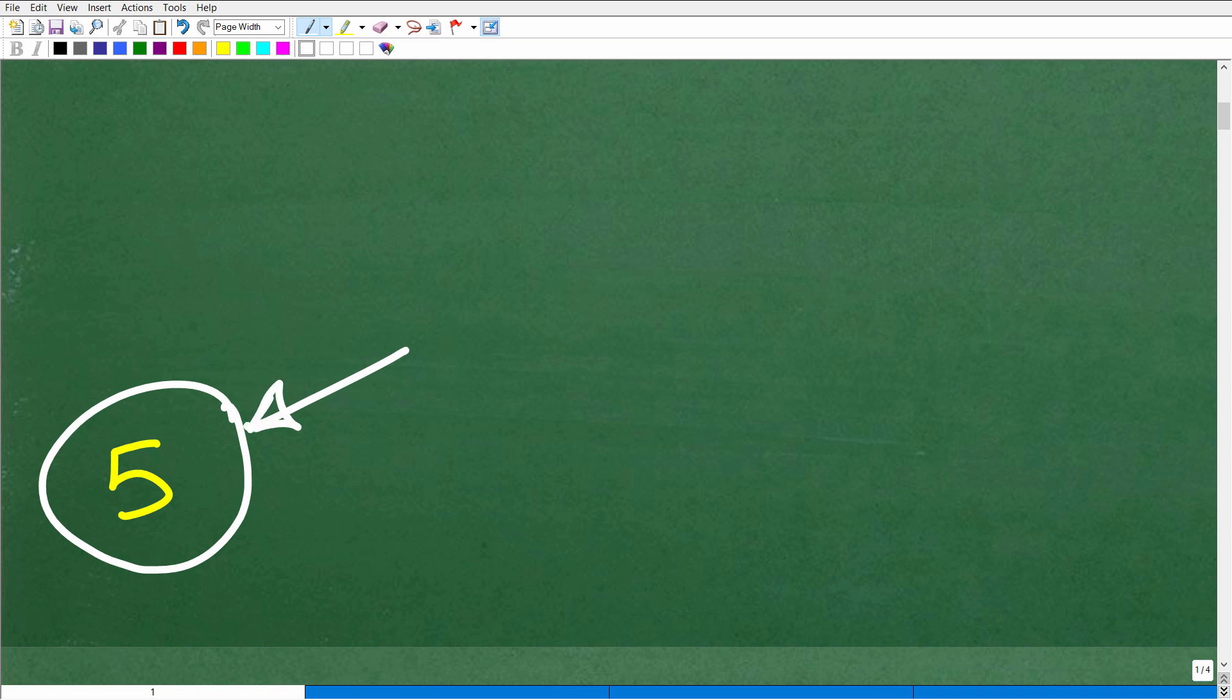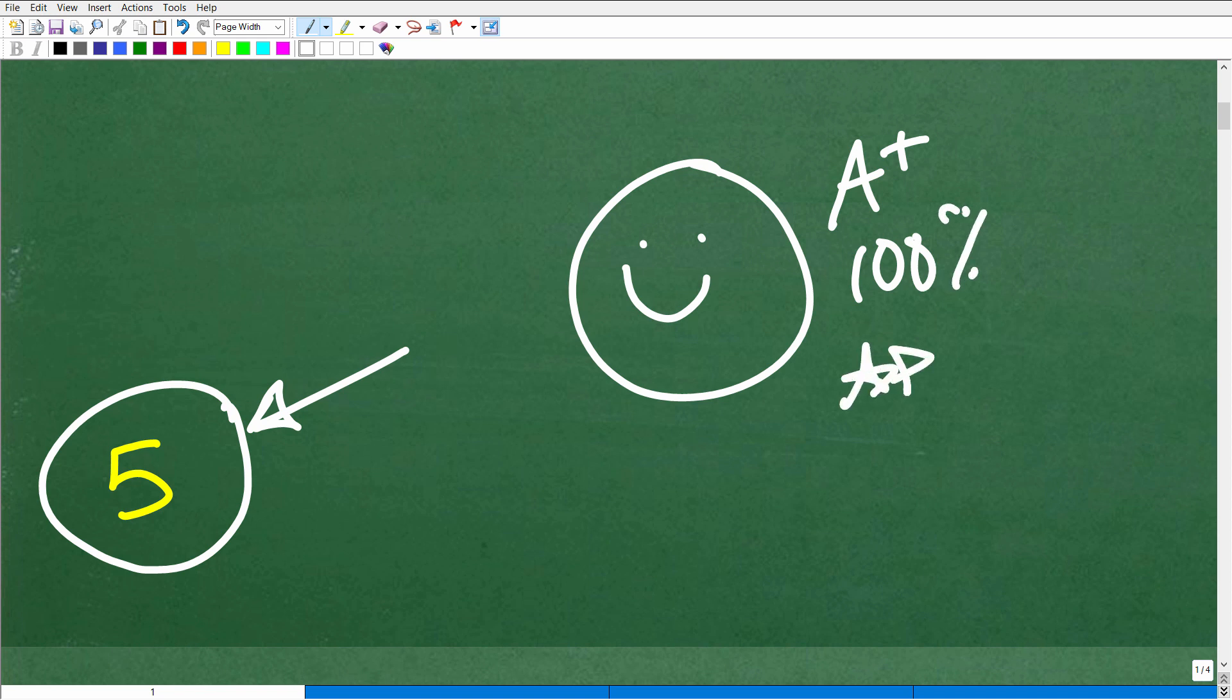Okay, so how'd you do? Well, if you got this right, that is fantastic. It shows me that you know a thing or two about the order of operations. Let's give you a nice little happy face and an A plus, a 100%, and a few stars so you can celebrate your success with simplifying numeric expressions. Again, you're going to need to know something about the order of operations and positive and negative numbers.